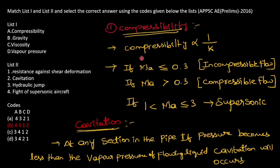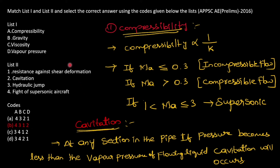Let us understand compressibility points. Compressibility is inversely proportional to bulk modulus. If Mach number is less than 0.3, the flow is called incompressible flow. If Mach number is greater than 0.3, the flow is called compressible flow. If Mach number is 1, 2, or 3, then it is supersonic. Coming to cavitation: when at any section in a pipe, if pressure becomes less than the vapor pressure of the flowing fluid, then cavitation will occur. I have already made a video on vapor pressure and cavitation — please watch that video for in-depth knowledge.